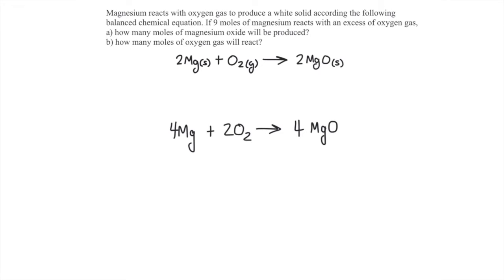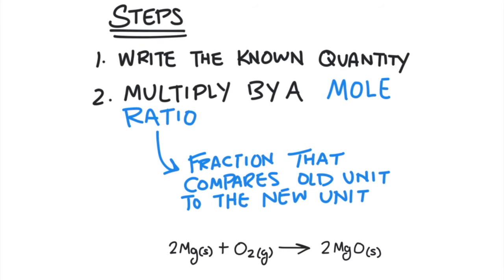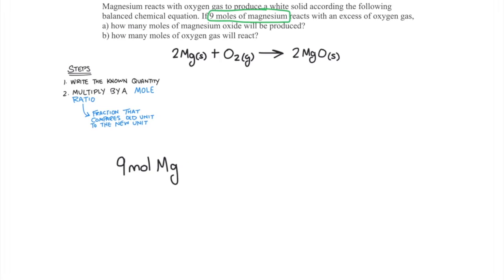I doubled the recipe. To solve this problem using mole ratios, we're going to use these steps. First, we'll write down the known quantity — in this case, 9 moles of magnesium. Second, we'll multiply this known quantity by a mole ratio that compares the unknown substance to the known substance. The mole ratio is a fraction that uses the recipe. The unknown substance always goes on the top of the mole fraction, and the known substance goes on the bottom.